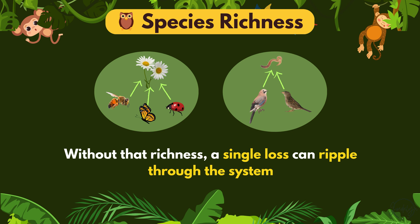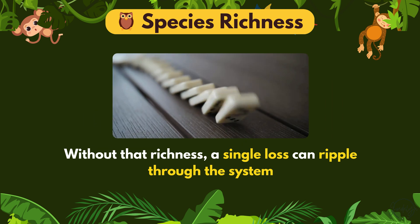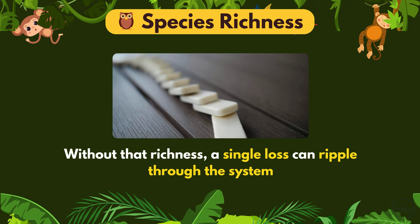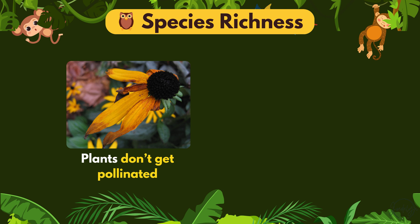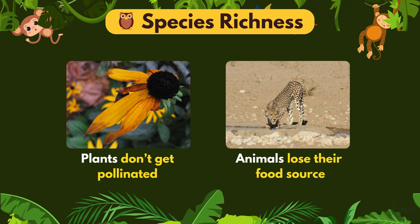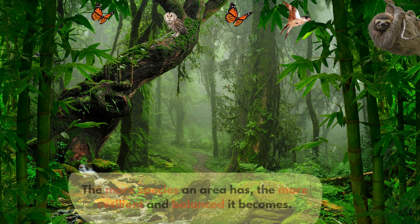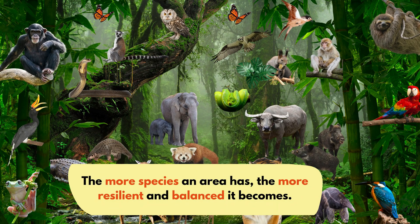Without that richness, a single loss can ripple through the system. Plants don't get pollinated, animals lose their food source, and the whole ecosystem becomes weaker. So the more species an area has, the more resilient and balanced it becomes.